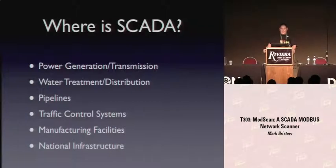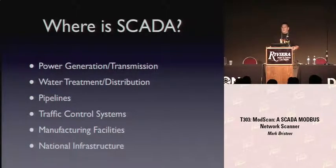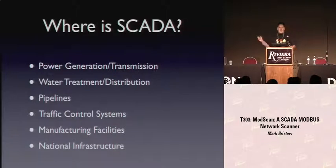Gas is $4 a gallon - that's all piped through pipelines, and all those pipelines are controlled with SCADA control systems. In big cities like Washington D.C., traffic control systems are typically done by SCADA. So believe it or not, in some of those crazy hacker movies like Hackers, there are some systems where you could actually control the traffic lights if you were so inclined. This stuff touches your life a whole lot.